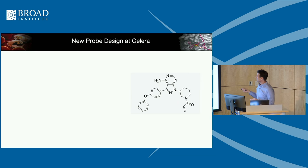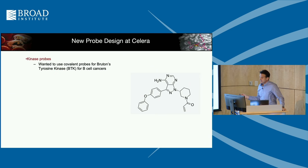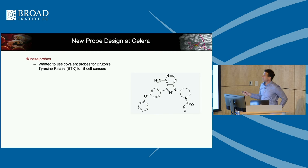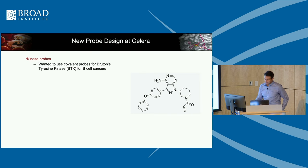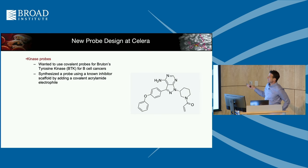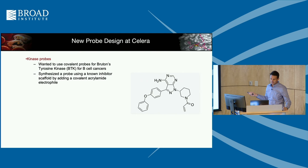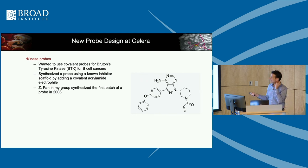One of the early molecules my group synthesized was a probe for BTK — B-cell tyrosine kinase — which was a big target in the early 2000s, involved in numerous cancers. This probe was synthesized by Zhenying Pan in 2003, using a known inhibitor with an electrophile attached to target a cysteine in the ATP binding pocket of the kinase.